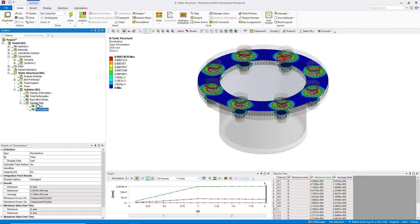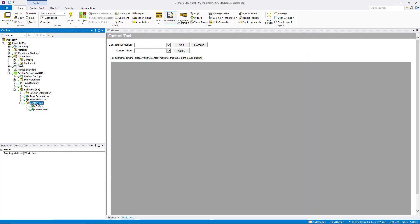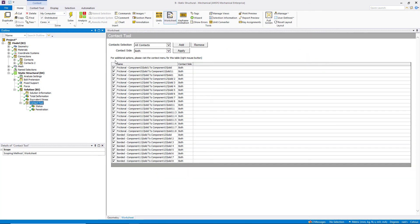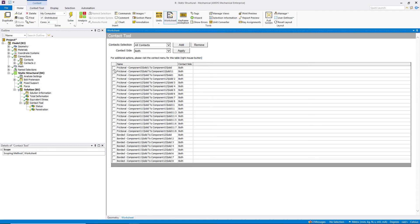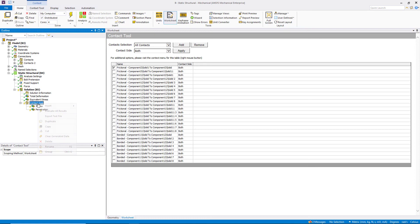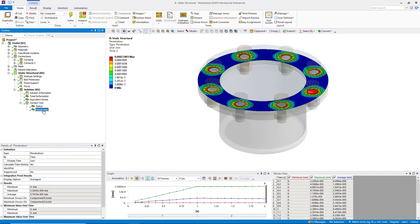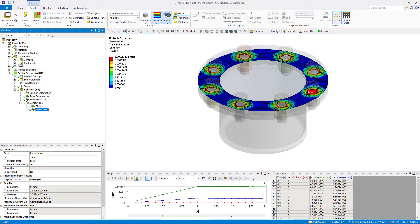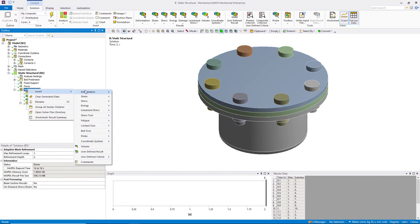We can either extract them for all the contact pairs, or a few selected ones. This selection can be done by scoping the contact tool to worksheet, which will list all the available contact pairs. There is no general rule of thumb, but a good practice is to check that the maximum penetration is at least an order of magnitude less than the adjustment in the bolt pretension probe.